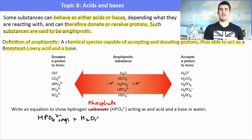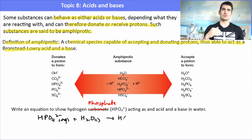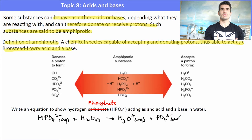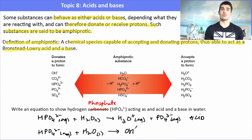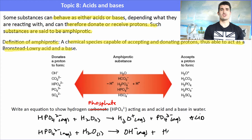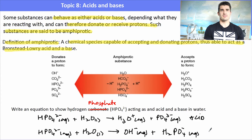First equation — hydrogen phosphate acting as an acid: HPO₄²⁻ + H₂O → H₃O⁺ + PO₄³⁻. It donates a proton to water, forming the hydronium ion and the phosphate ion. Second equation — acting as a base: H₂O donates a proton to HPO₄²⁻, which receives it to form the dihydrogen phosphate ion H₂PO₄⁻ (singly charged). That's the basic reaction.